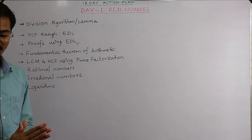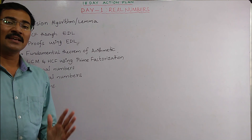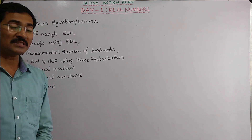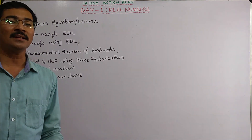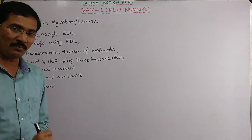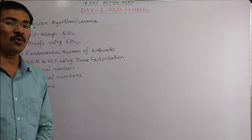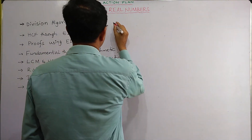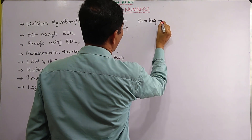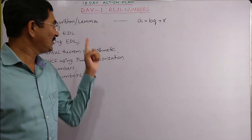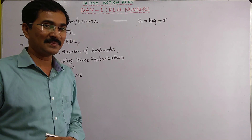Euclid's Division Lemma says: for a given pair of positive integers a and b, there exists a unique pair of integers q and r satisfying a = bq + r, where r is greater than or equal to 0 and less than b. This is very important — you must know that a = bq + r.